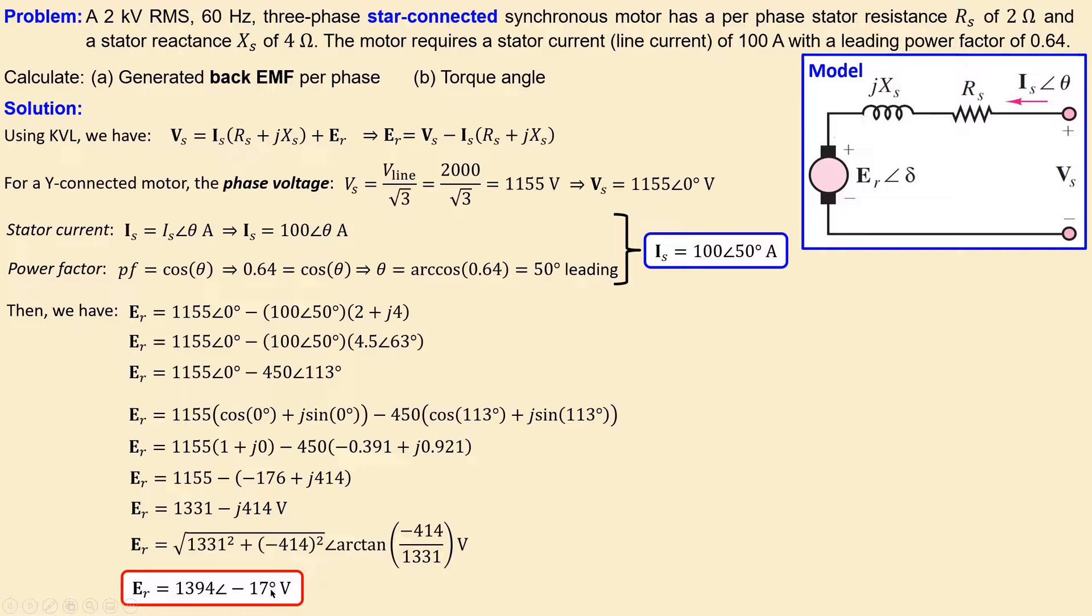If you do the math correctly, you'll get 1394 as the amplitude and minus 17 degrees for the phase. So the back EMF generated per phase is 1394 volts.